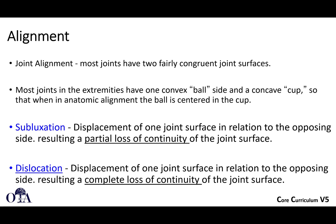When there's anatomic alignment, that ball of the femoral head is centered in the cup. Subluxation is when one joint surface in relation to the other is displaced — there's partial loss of continuity. So the joint is not fully dislocated, but it's not congruent either. It's potentially on its way to being dislocated, and we call that subluxed.